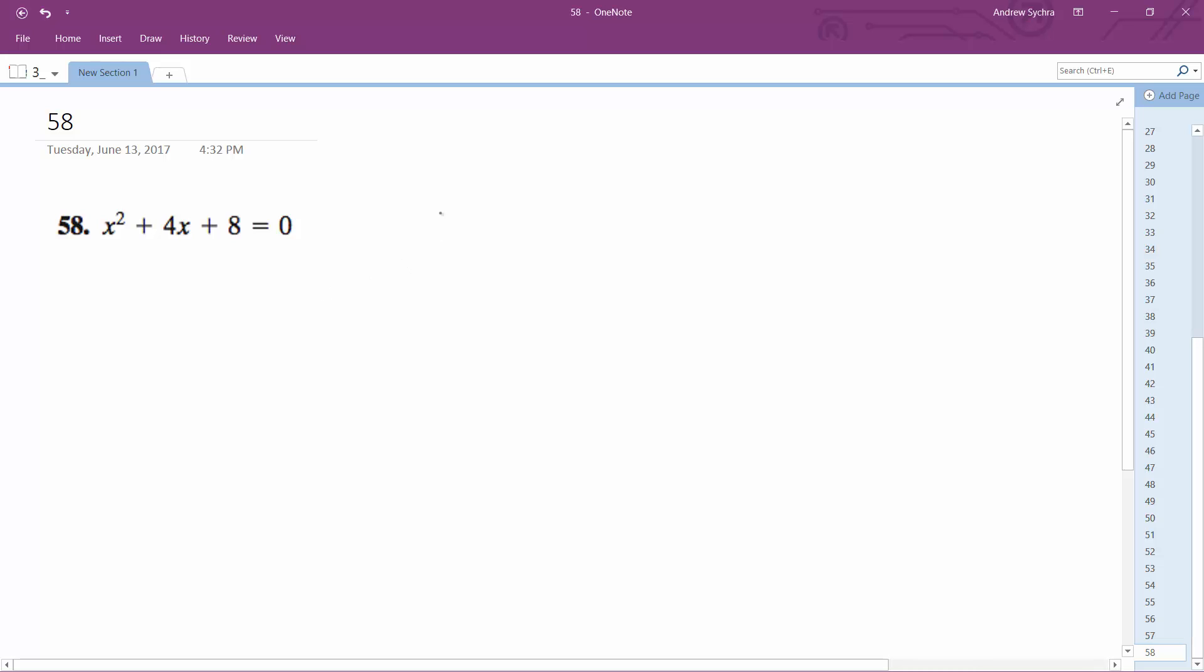Let's solve for x in this. We're going to use the quadratic formula: opposite of b plus or minus b squared minus 4ac, all over 2a.